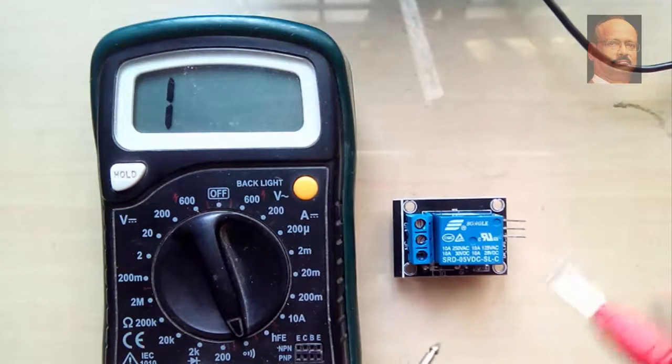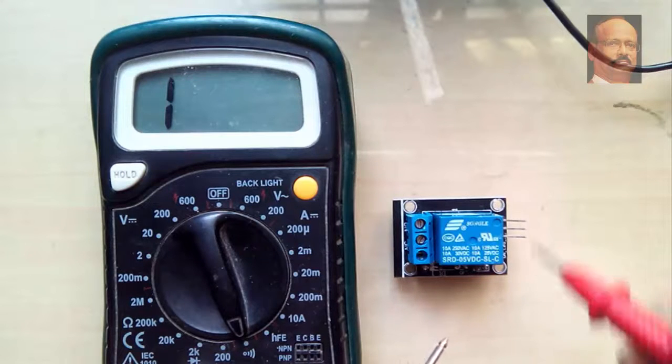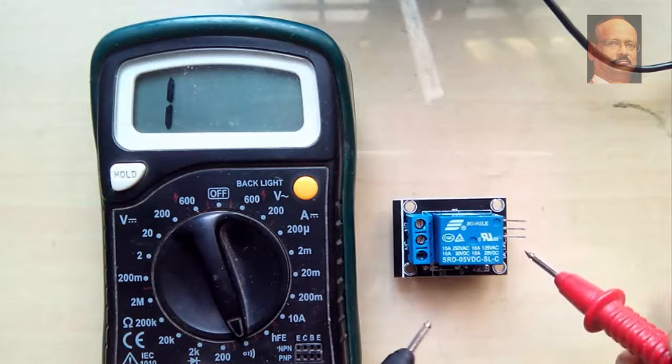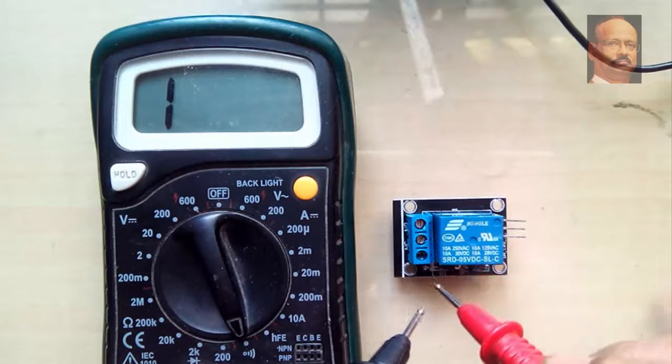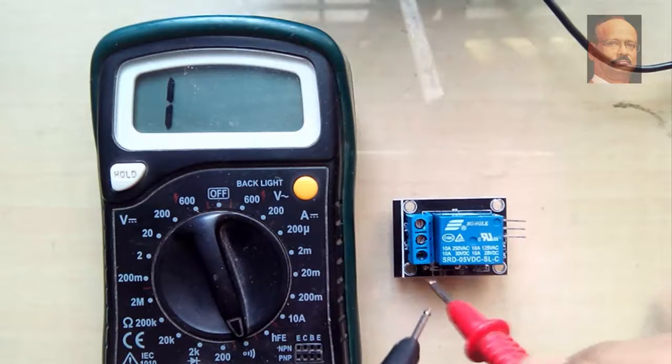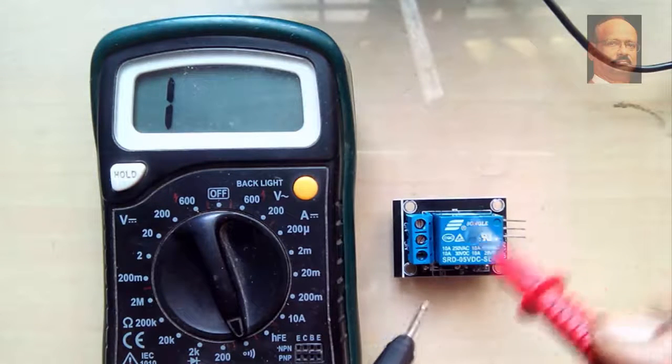In order to understand which one is normally open, that means when the power is not given or the signal is not given, one of the points from the common point will be in close contact, one will be in open contact.